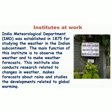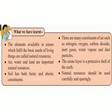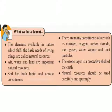Now we will see what we have learned. The elements available in nature which fulfill the basic needs of living things are called natural resources. Air, water, and land are the important natural resources. Soil has both biotic and abiotic constituents. There are many constituents of air such as nitrogen, oxygen, carbon dioxide, dust particles, etc. The ozone layer is a protective shell. Natural resources should be used carefully. You have to write all these things in your notebook and send me on WhatsApp. Thank you.